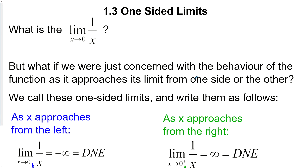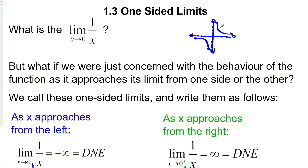1.3: one-sided limits. What is the limit of 1 over x as x approaches 0? If we give this a quick visualization, we have a vertical asymptote at x equals 0 — that's our non-permissible value — and a horizontal asymptote at y equals 0. The function fits in here and here. Coming from the left and coming from the right, we don't approach the same limiting value, so this limit does not exist.